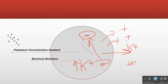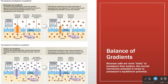Now it gets more complicated because we have both sodium and potassium in play all the time. They do not cancel each other out. Instead, both Nernst potentials are in play all the time, and what we see in the cell is somewhere in between the Nernst potential for sodium and the Nernst potential for potassium. Because of selective permeability, we can open or close sodium channels or potassium channels.